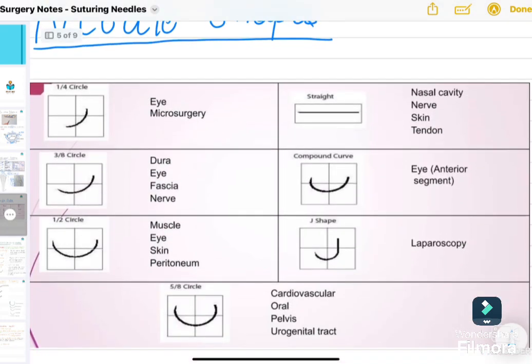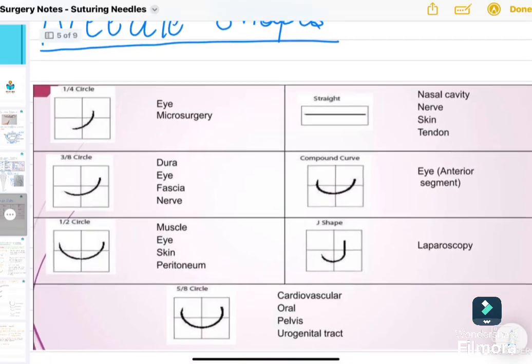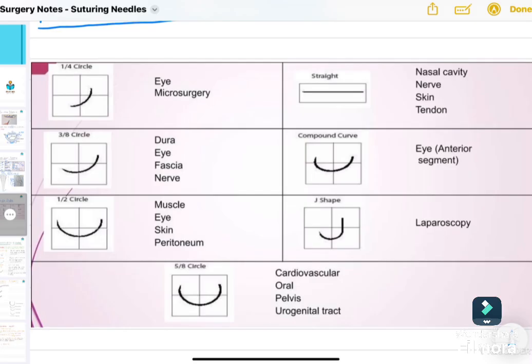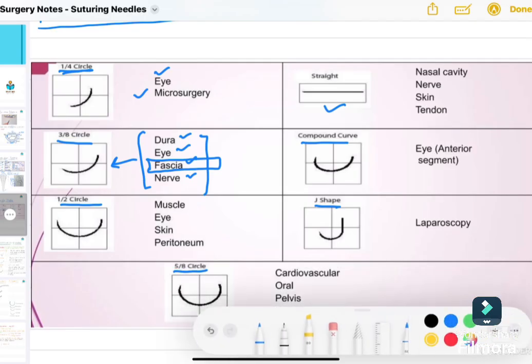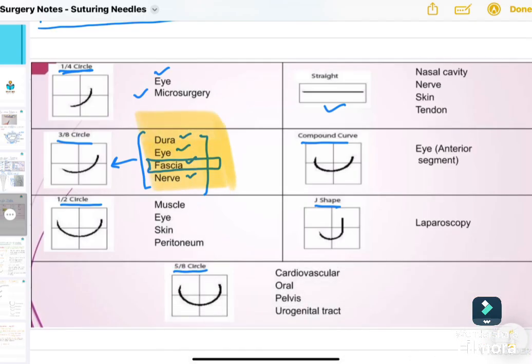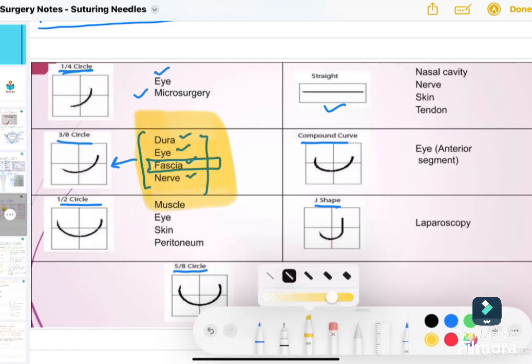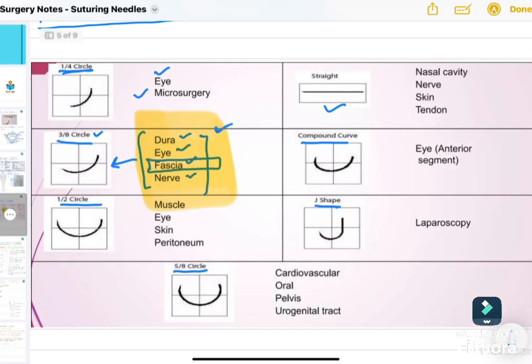Now needle shapes. We have different shapes of needles available as per the surgeon's need: 1/4 circle, 3/8 circle, half circle, straight, compound curve, J shape, and 5/8 circle. 1/4 circle is generally used in eye or microsurgery. 3/8 circle is used for dura, eye, fascia, nerve. Among these, remember fascia is more important. For fascia, we prefer 3/8 circle needle.